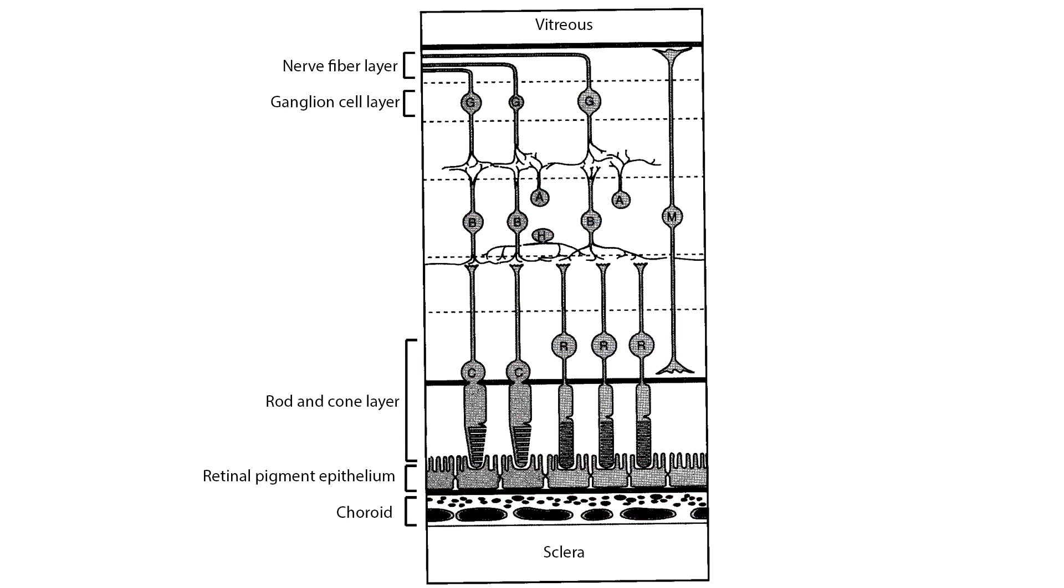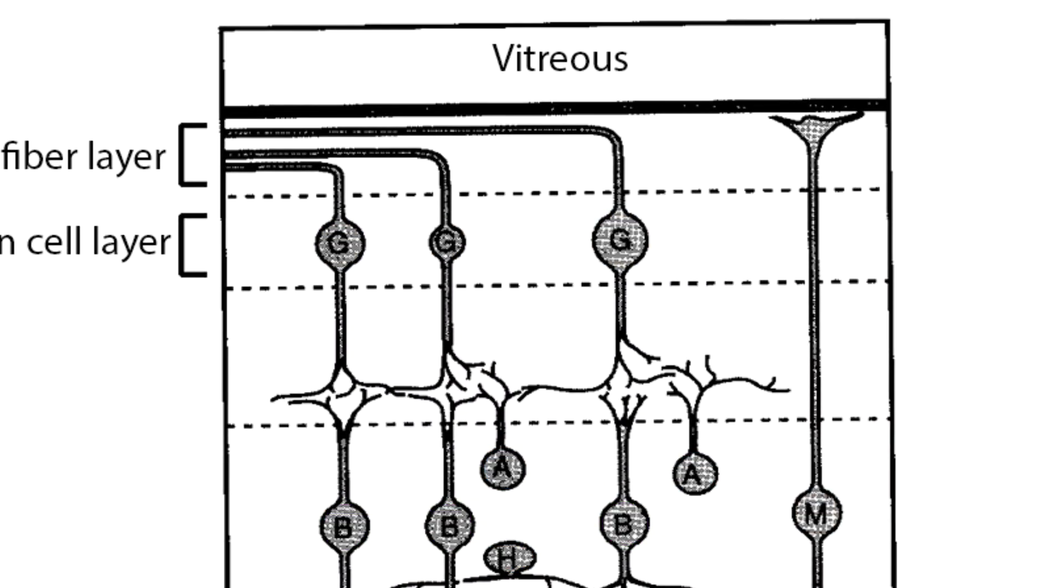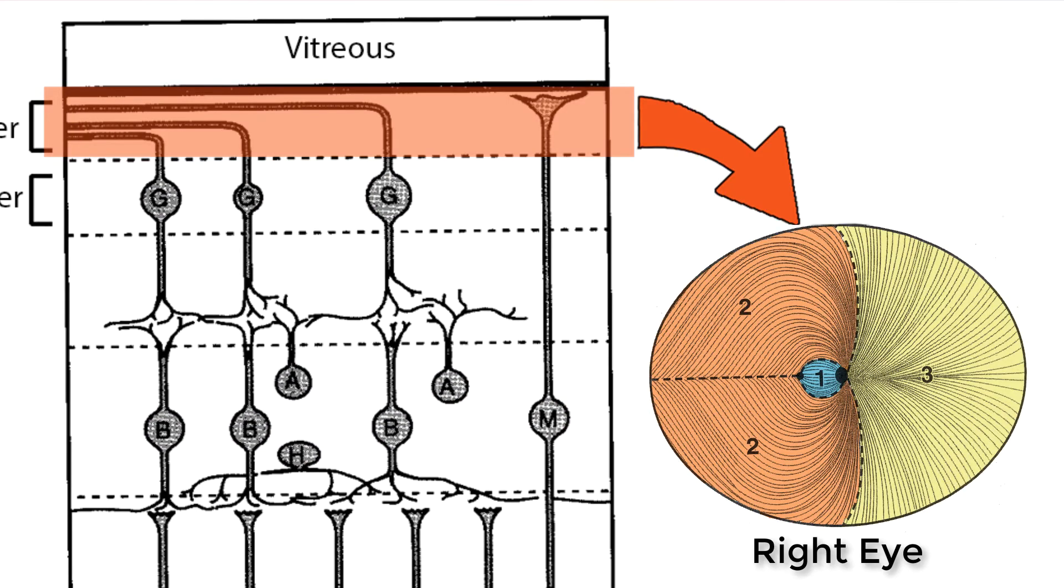The rods and cones connect to bipolar, horizontal, and amacrine cells which refine the signal. The refined signal reaches the retinal ganglion cells which further refine the signal. Their axons in the retinal nerve fiber layer converge on the optic disc to leave the eye.